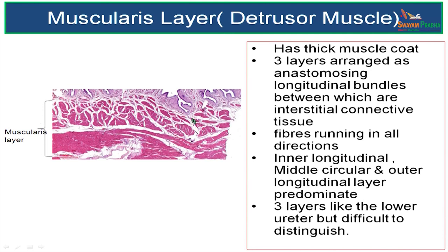Next, we will talk about the muscular layer or the muscularis. The thick muscle coat is called the detrusor muscle. There are three layers of muscle coat, but they are arranged as anastomosing longitudinal bundles in between which there is interstitial connective tissue. The fibers are running in all directions. The three layers are inner longitudinal, middle circular, and outer longitudinal.